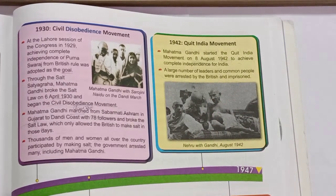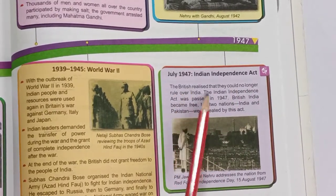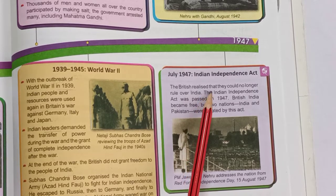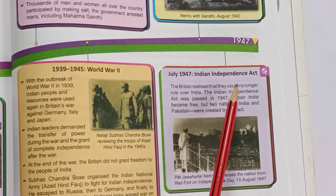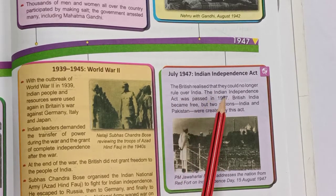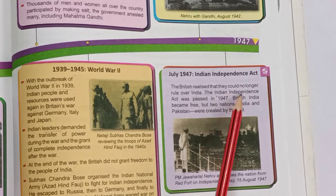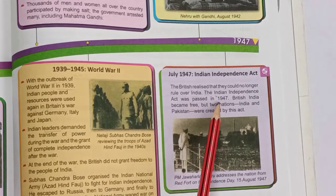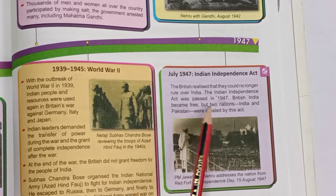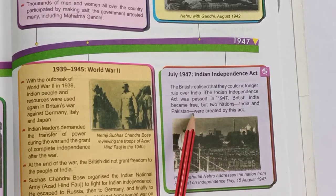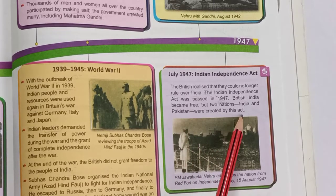In July 1947, the Indian Independence Act was passed. The British realized they could no longer rule over India, as leaders and common people were against them. India became free, but through this Act, two nations were created — India and Pakistan.